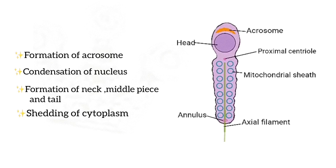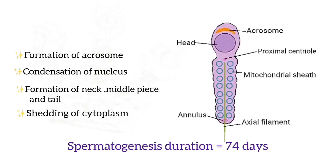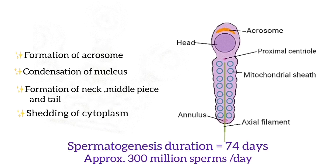The total time taken for the formation of spermatozoa is 74 days, and this is the duration of spermatogenesis. An approximate number of 300 million sperms are produced per day.